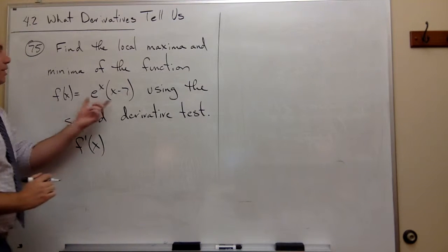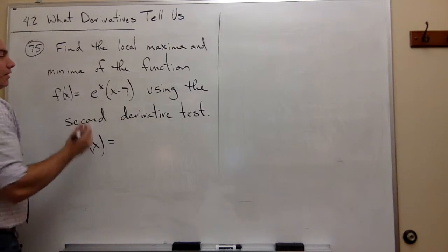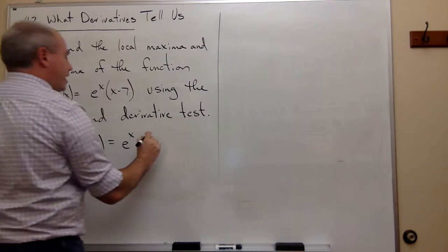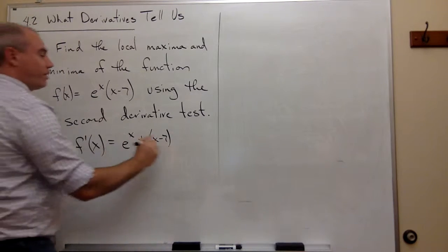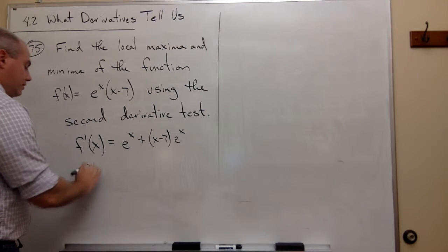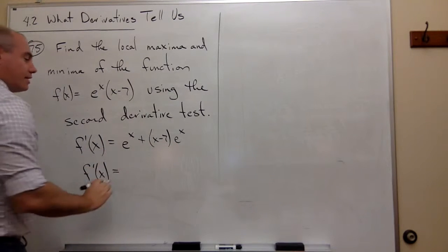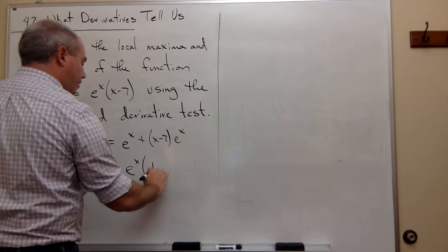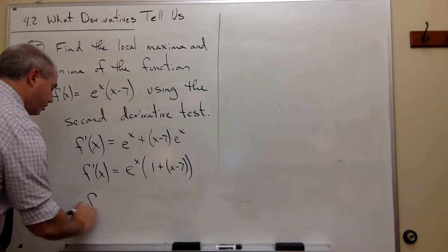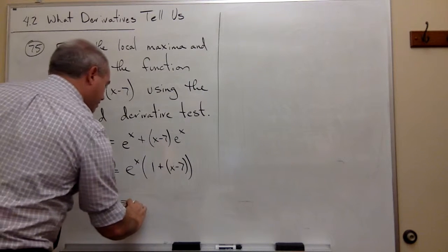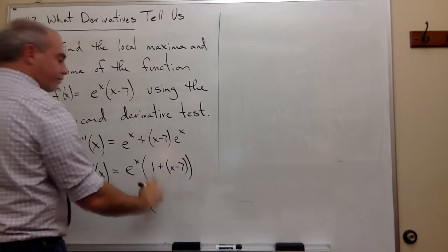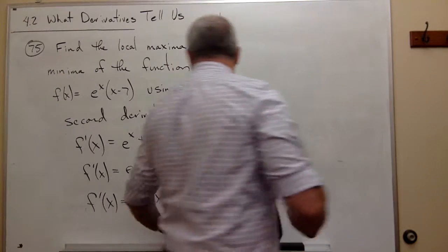So we find f'(x), and the derivative of this function is the first guy, e^x, times the derivative of the second, which is 1, plus the second, (x minus 7), times the derivative of the first, which is e^x. I can factor out an e^x, and I get e^x times (1 plus x minus 7). So f'(x) equals e^x times (x minus 6).